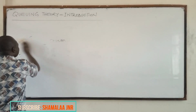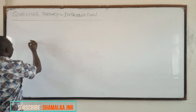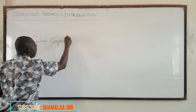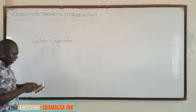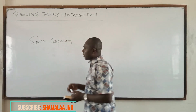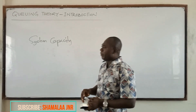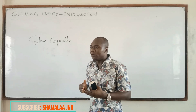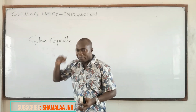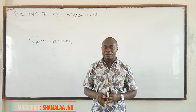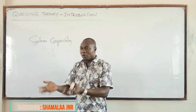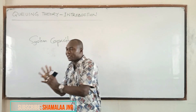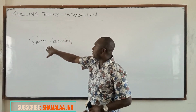We also have what you call system capacity. System capacity is the maximum number of customers — both those who are being served and those in queues — permitted in a service facility at the same time. For example, when you go to the bank, the total number of people that are permitted in the bank is known as the system capacity.